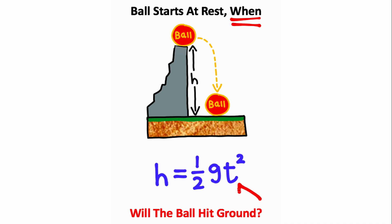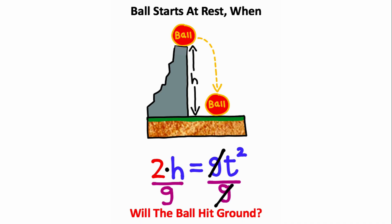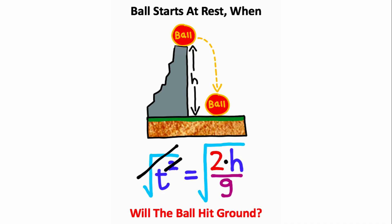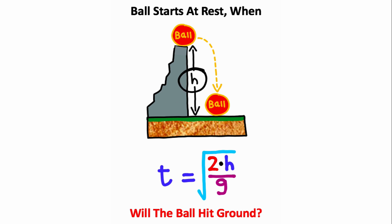Since we want to know when the ball hits the ground, we're trying to calculate a time. What I'm first going to do is multiply 2 on both sides of the equation to cancel the one half. I'll then divide both sides by g, which is gravitational acceleration, and then I'll take the square root of both sides, which will get the time by itself. So assuming we're on Earth and we know the height of the cliff, this equation will tell you when the ball hits the ground.